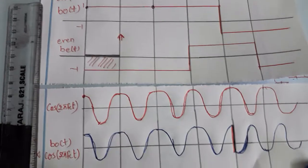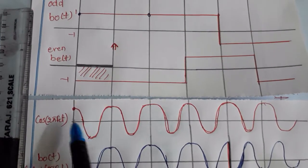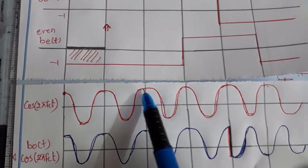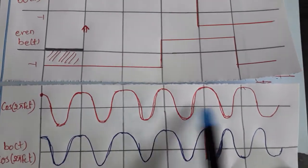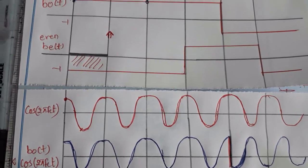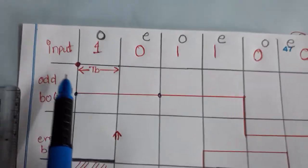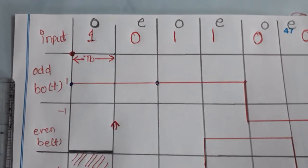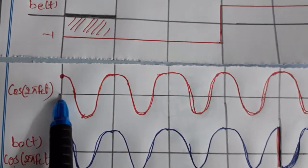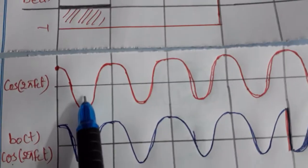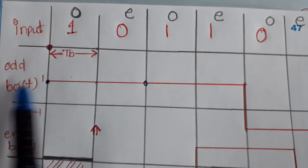The next component to consider is cos(2π fc t). Since cos(0) is 1, I have drawn the cosine waveform. Now I am going to multiply the odd component with the cosine. For the odd component value of plus 1 over the entire bit period TB, 1 multiplied by the carrier is the carrier itself — the carrier is retained as is.